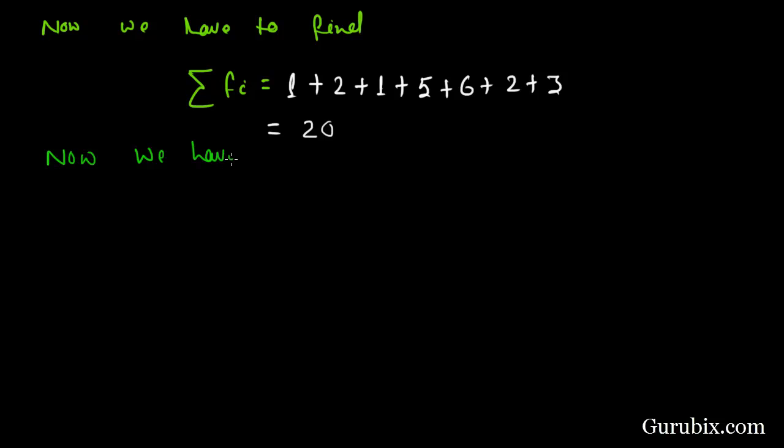Now, we have to find summation of xi fi, which is equal to 1 plus 6 plus 5 plus 35 plus 54 plus 22 plus 39, which is equal to 162.